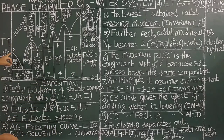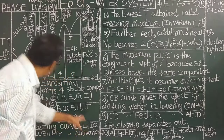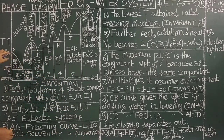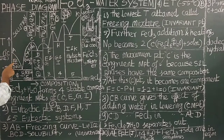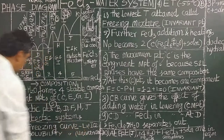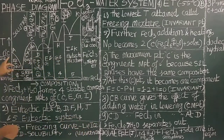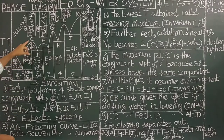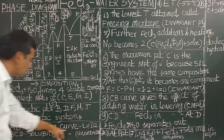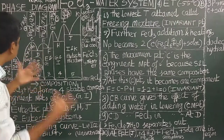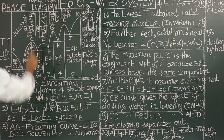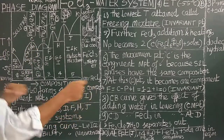AB is the freezing curve. Along this curve, the solution (liquid) is in equilibrium with ice, and it is univariant. The curve B-C-D is called the solubility eutectic curve, similar to the potassium iodide-water system.